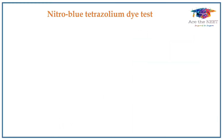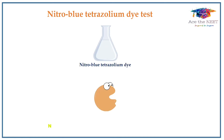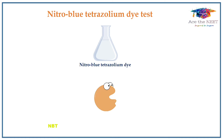This test uses nitro blue tetrazoleum dye, which is a colorless compound. In the presence of NADPH, it reduces and precipitates into blue-black deposits called formazone within the neutrophils. Whenever the dye changes its color, it indicates that NADPH is present and neutrophils can efficiently produce reactive oxygen species.